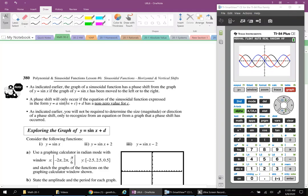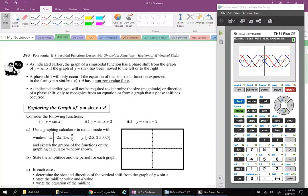As indicated earlier, the graph of a sinusoidal function has a phase shift from the graph of y equals sine x if the graph has moved to the left or the right. A phase shift will occur if the equation of the sinusoidal function expressed in the form y equals a times sine bx plus c plus d has a non-zero value for c. As indicated earlier, you will not be required to determine the size, the magnitude. So you don't have to worry about the size or the direction of the phase shift, only to recognize from an equation or from a graph that a phase shift has occurred, which certainly makes our life a little bit easier.